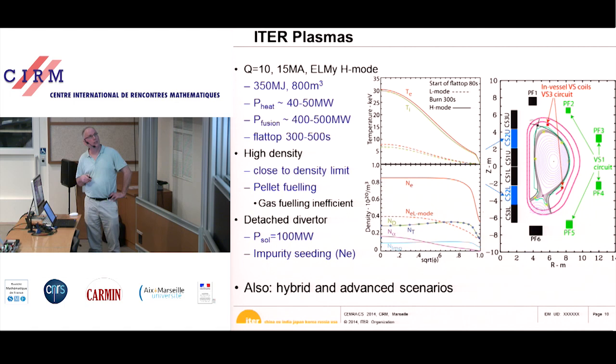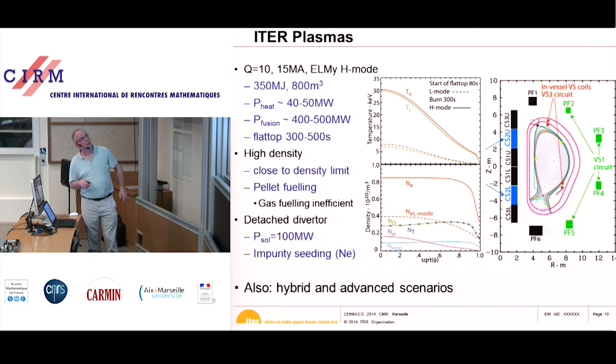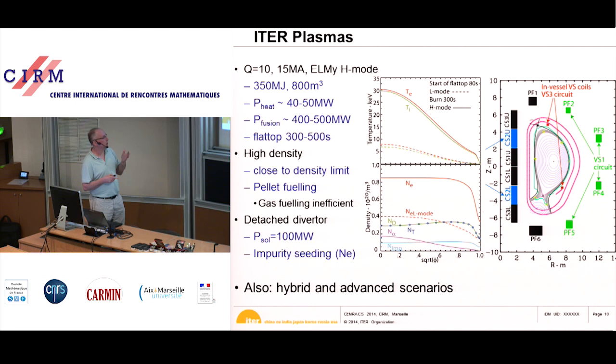We need to operate in a detached diverter mode, which basically means very high density and very low temperatures in the diverter. This is done by adding local impurities such as neon, which radiate most of the energy away, so that the temperature at the diverter is below 10 eV compared to a plasma of 30,000 eV. There are also hybrid and advanced scenarios for long quasi-steady-state plasmas, but these will be after initial ITER operation — 15 years or more from now.